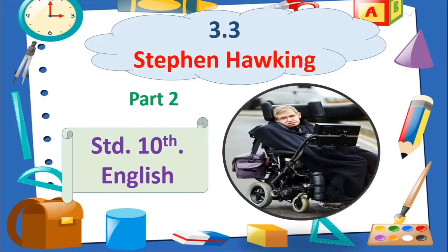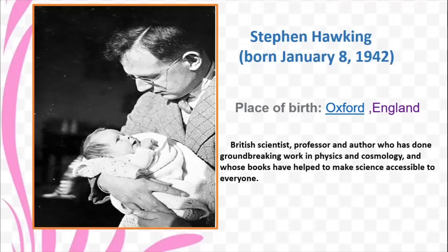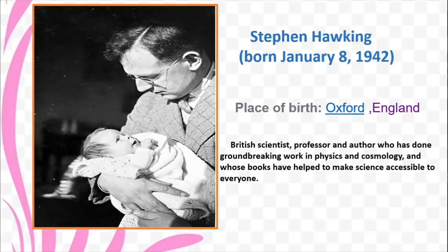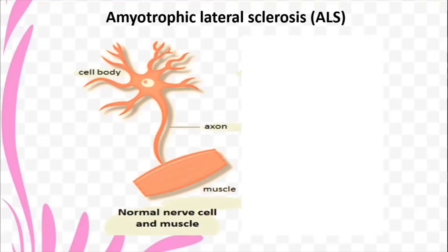Now before going to Part 2 and before looking at certain grammar points in the lesson, we will quickly recap and look back at what we have learnt in Part 1. We talked about how Stephen Hawking was born on the 8th of January 1942 at Oxford in England. He went on to become a British scientist, a professor, an author who has done some groundbreaking work in physics and cosmology, and whose books have helped to make science accessible to common people.